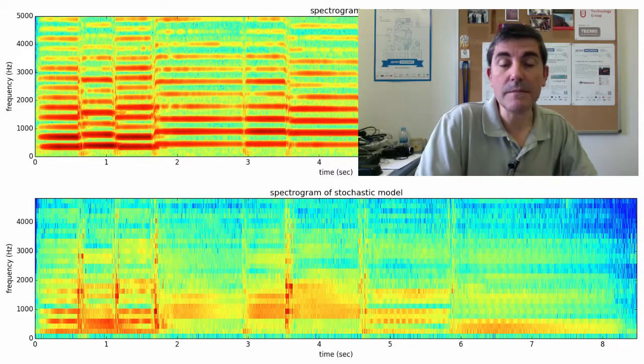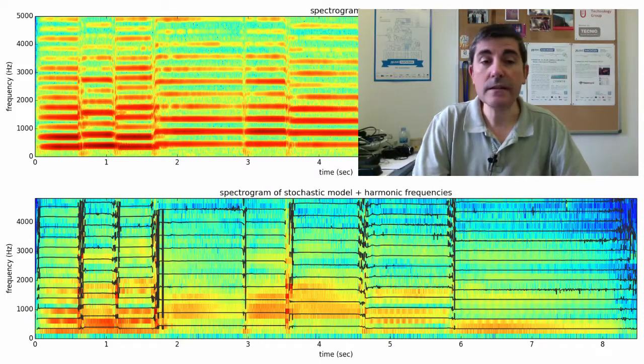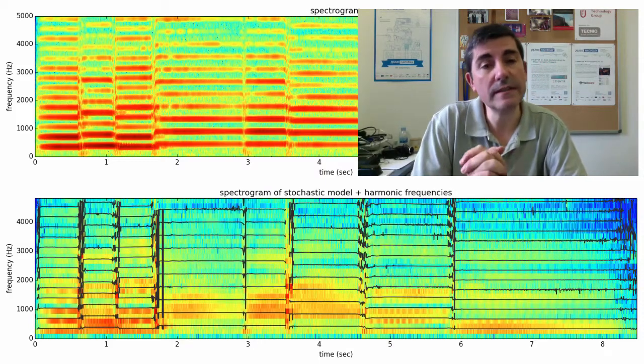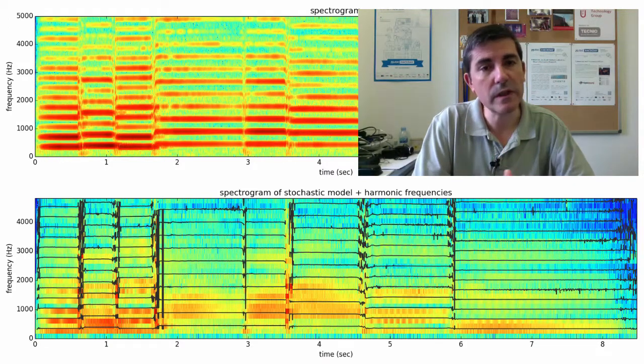This residual spectrogram can be approximated with what we call a stochastic model. And we can put it together—the harmonics plus the stochastic model—and this is a representation quite useful and quite powerful. We can do a lot of things with it.